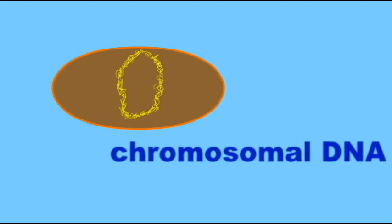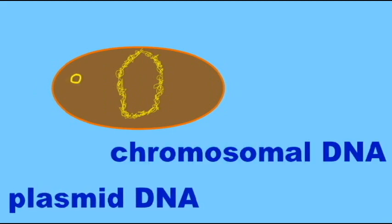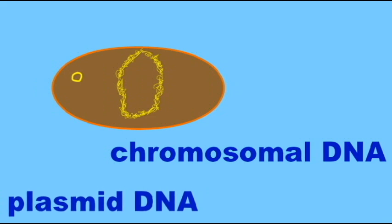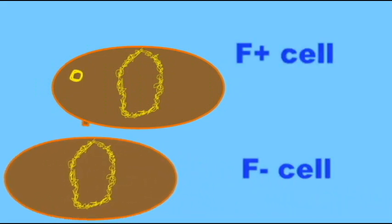As cell membranes fuse, the duplicated F-plasmid can then be transferred from the F-plus cell into the F-minus cell. As a result of this process, known as conjugation,